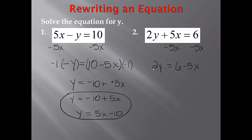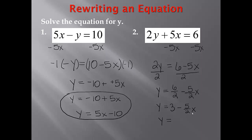Now we have 2y. Since we are multiplying 2 times y, we will need to divide by 2 to solve. We divide both sides by 2. 2 divided by 2 is 1, so we have y. On the right-hand side, 6 divided by 2 minus 5x over 2 — we can also write that as 5 halves times x. We can simplify 6 over 2 to get 3. So y equals 3 minus 5 halves x. We could also rearrange the right-hand side to say y equals negative 5 halves x plus 3. Both of these answers would be correct.